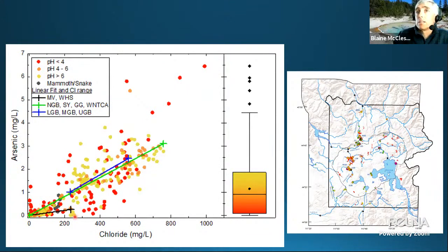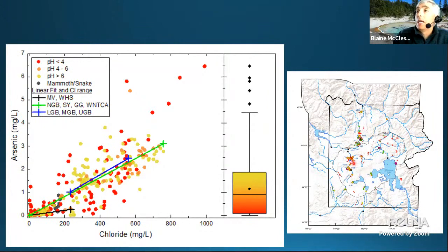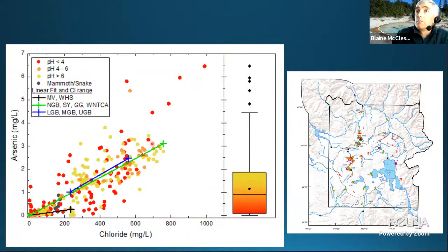The arsenic-to-chloride ranges in various basins show: acid sulfate waters from Mud Volcano and Washburn Hot Springs have arsenic and chloride concentrations less than 100 milligrams per liter; alkaline chloride waters in Lower, Midway, and Upper Geyser Basins have chloride approximately 350 milligrams per liter; and highly mixed waters near Norris Geyser Basin show exceptionally high arsenic concentrations to be discussed further.